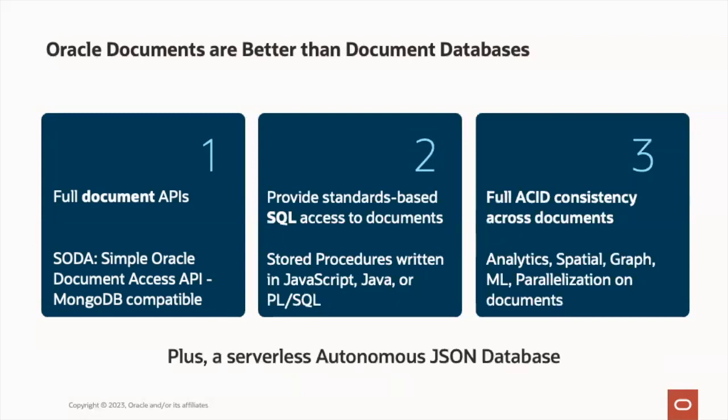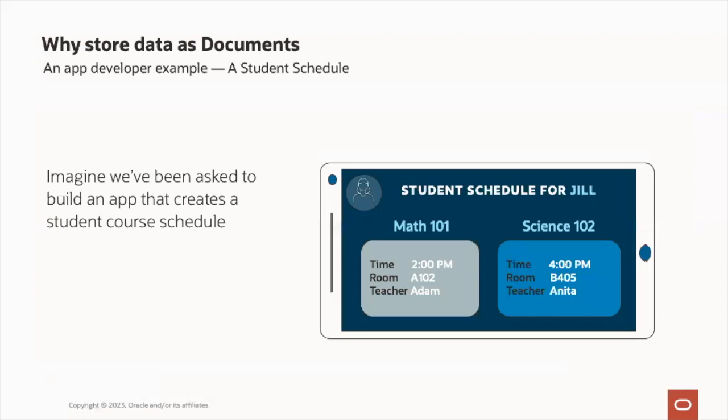For customers who are looking for a standalone document store where administrative tasks are handled for you, Oracle has a fully autonomous serverless JSON database offering. Let's take a look at an example here. We can see that we have a simple class schedule for a student named Jill. Jill is enrolled in two classes, and we can also see the time, the room, and the teacher for each class.